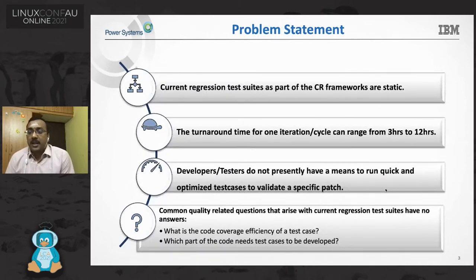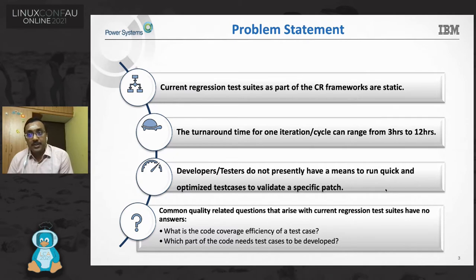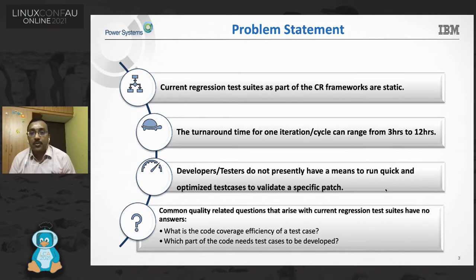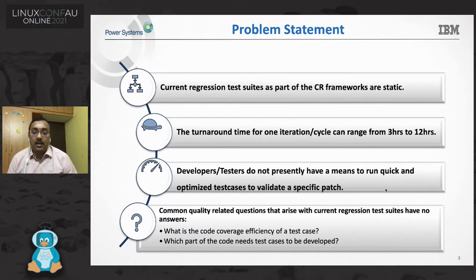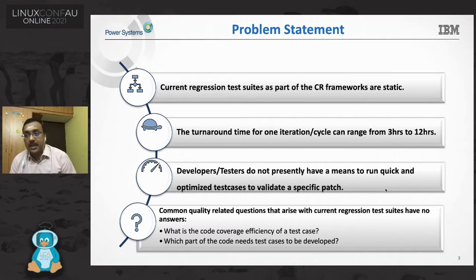Here is the problem statement. Current regression test suites are static — they are not going to change dynamically according to the patch or patch set we wanted to test. Turnaround time for one iteration of running these regression test suites ranges from 3 hours to 12 hours based on the regression test suite you select.